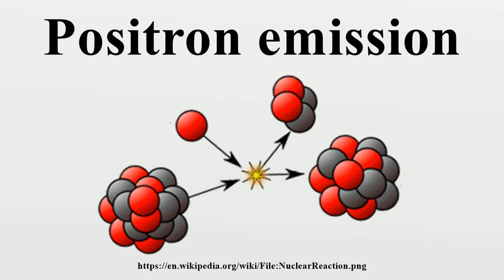Positron emission, or beta-plus decay, is a particular type of radioactive decay and a subtype of beta decay, in which a proton inside a radionuclide nucleus is converted into a neutron while releasing a positron and an electron neutrino. Positron emission is mediated by the weak force.